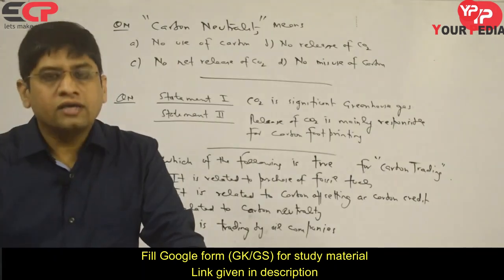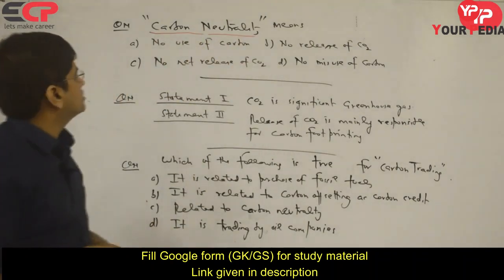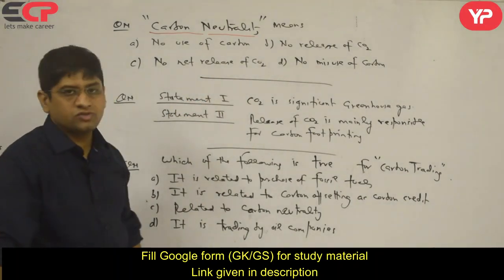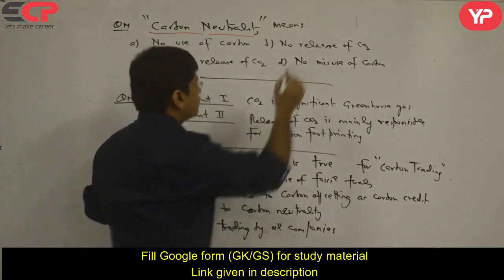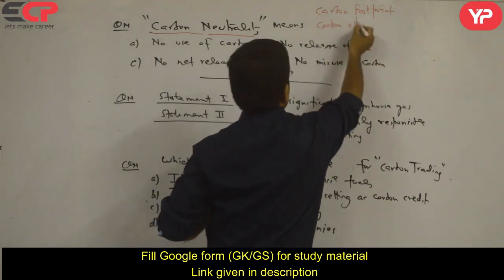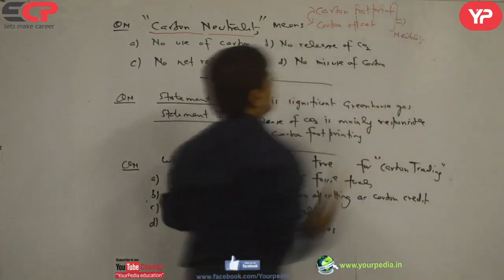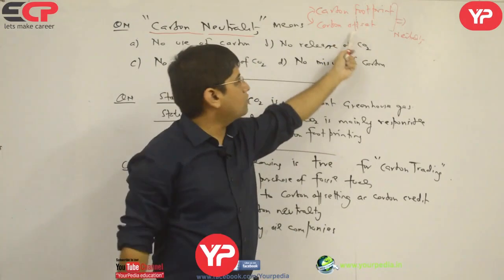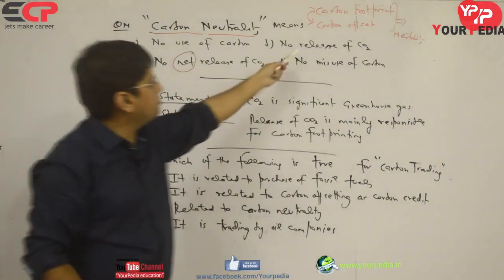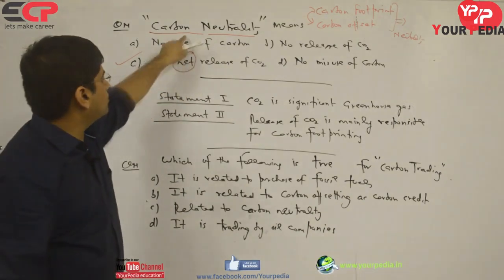What is the meaning of carbon neutrality? The choices are: no use of carbon, no release of carbon, no release of carbon dioxide, no net release of carbon dioxide, no misuse of carbon. Carbon neutrality means balancing carbon footprint and carbon offset. Footprinting means I released carbon dioxide; offsetting means I sink carbon dioxide. So net release of carbon dioxide is zero. Carbon neutrality means no net release of carbon dioxide.